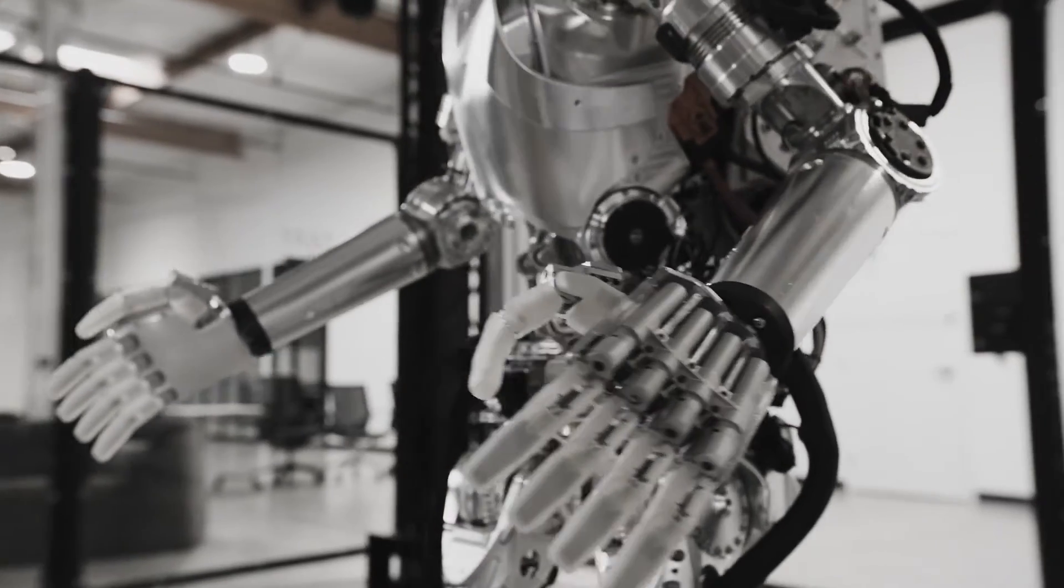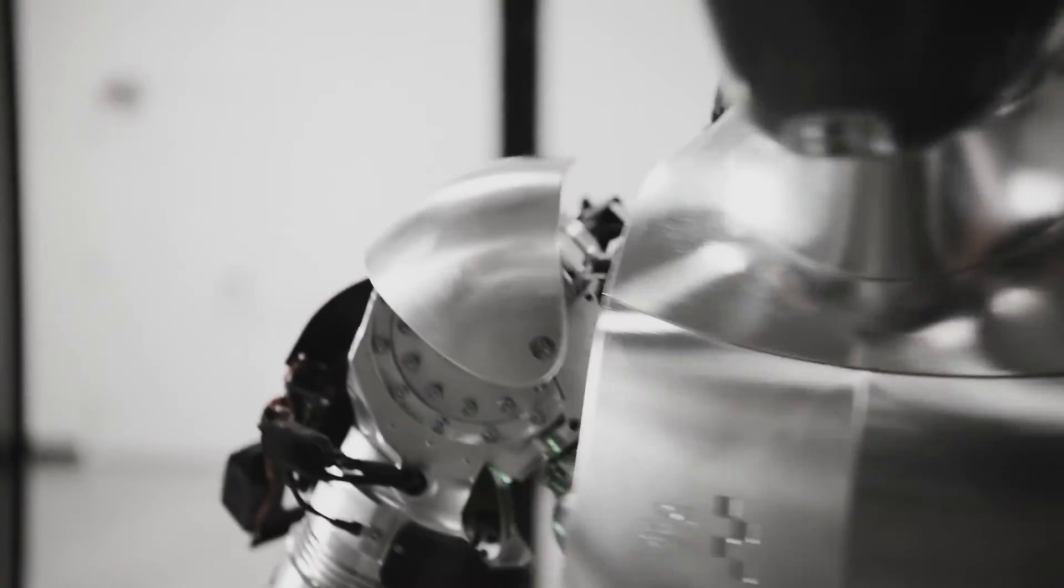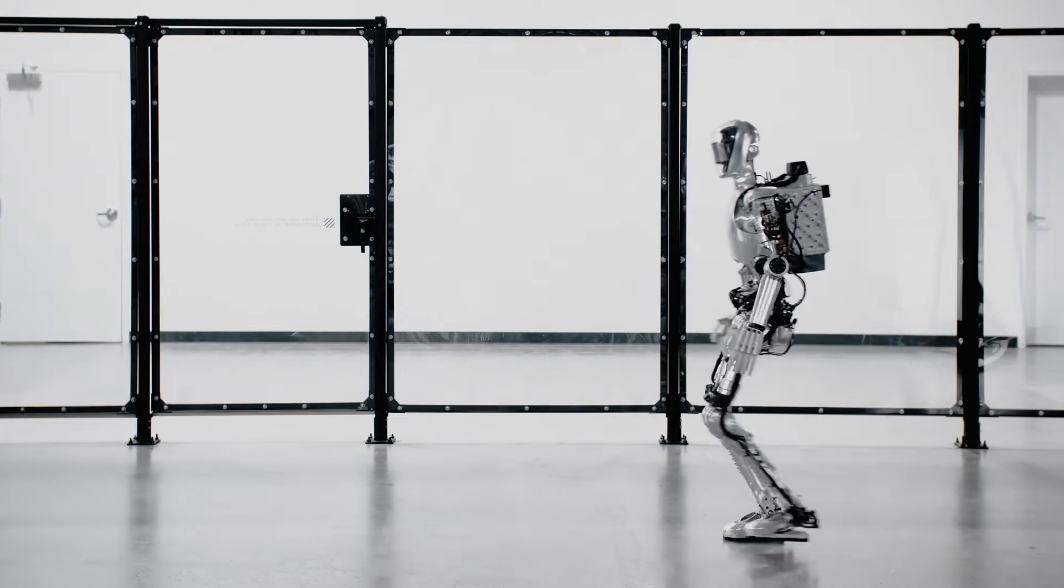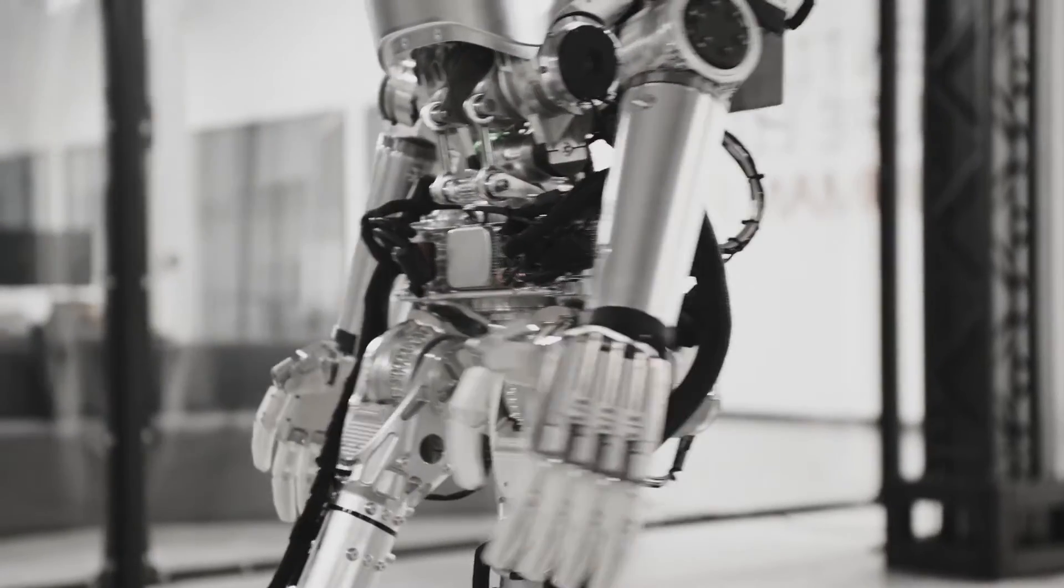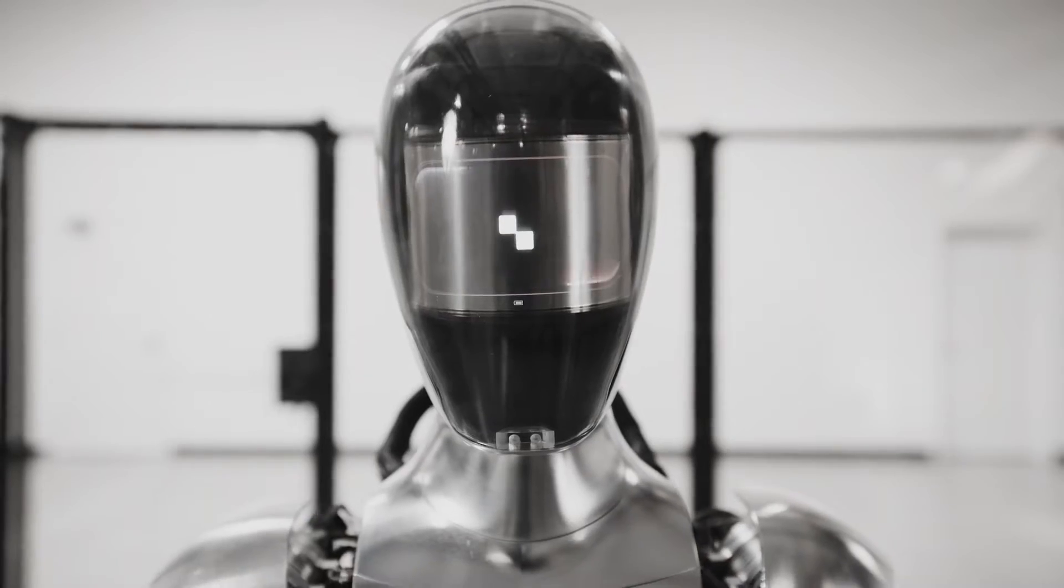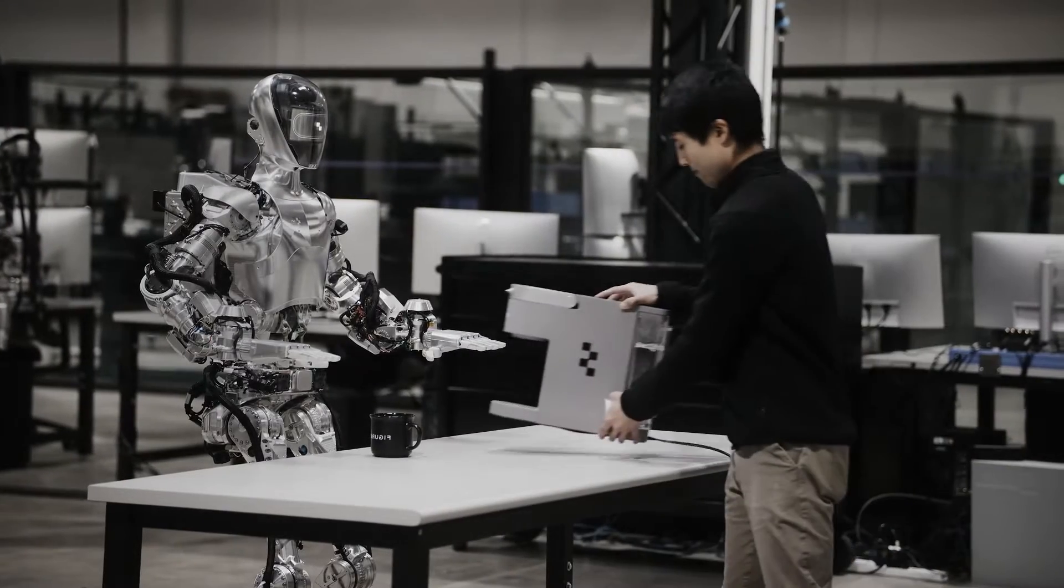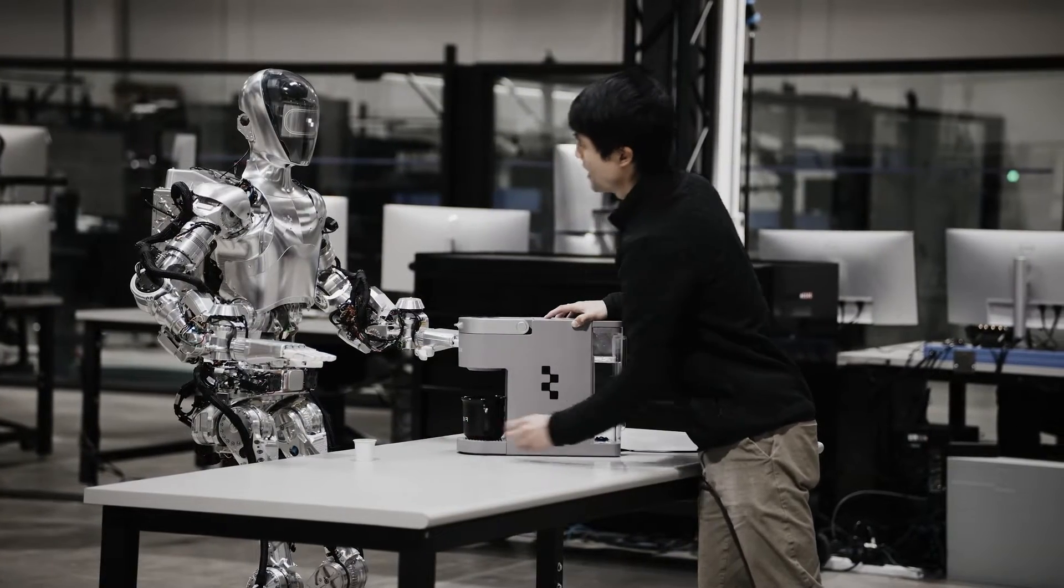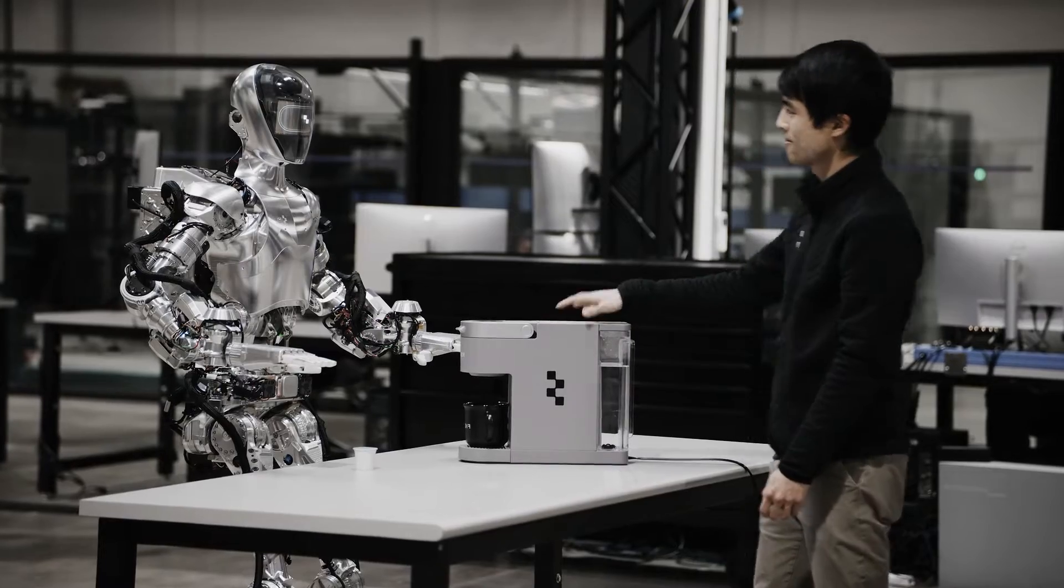For example, Figure 0-1 can learn how to make coffee by watching a human do it. It can use its computer vision to recognize the objects and actions involved, such as the coffee machine, the mug, the button, and the pouring. It can use its natural language processing to understand the verbal instructions and feedback from the human. It can use its machine learning to extract the relevant features and patterns from the data. And it can use its deep learning to optimize its neural network and improve its performance over time.